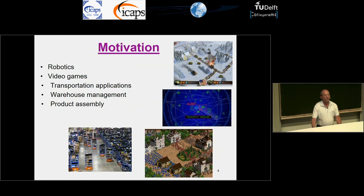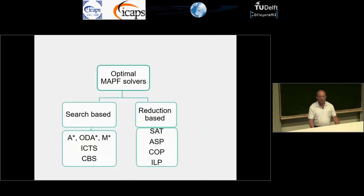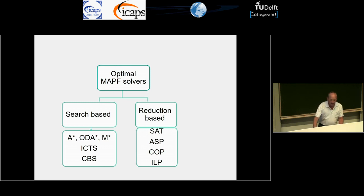The motivation for this problem is that there are many real-world applications to multi-agent pathfinding. How do we optimally solve it? There are many directions. We can classify them into two classes: reduction-based solvers, where you take this problem and reduce it to a known problem in computer science like SAT, answer set programming, or integer linear programming.